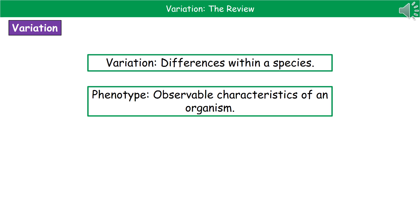Another word that we need to become familiar with is the term phenotype. Anytime you see the word phenotype, what we're looking for is the observable characteristic of an organism — so that would be things like blue eyes or brown hair. The thing you can actually see is the phenotype.